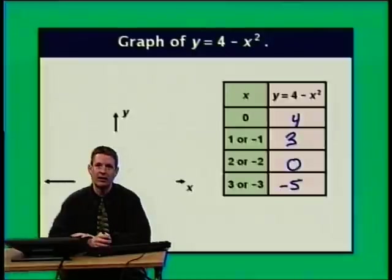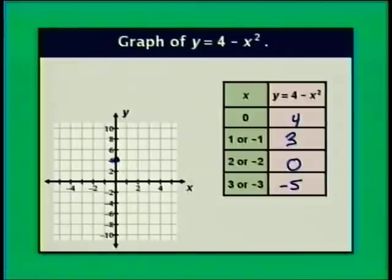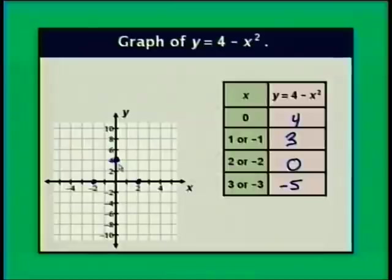The horizontal intercepts are (2, 0) and (negative 2, 0), so the axis of symmetry is x equals 0, meaning the point (0, 4) is our vertex. Notice that the vertex is above the horizontal intercepts — something new is happening here. We're going to get a parabola where the vertex is on top rather than the bottom as in all our previous examples.